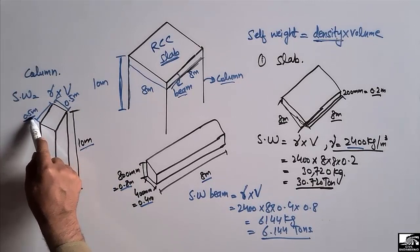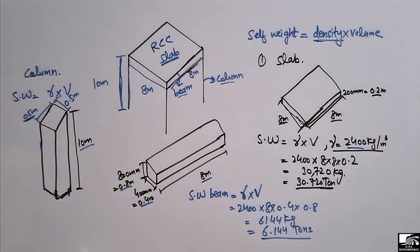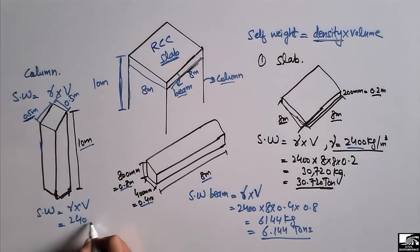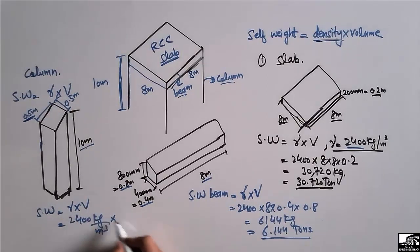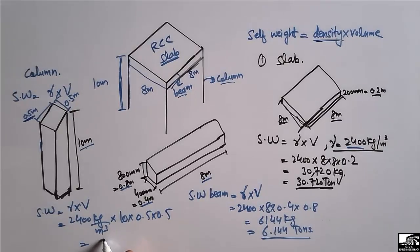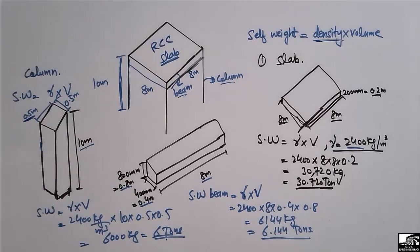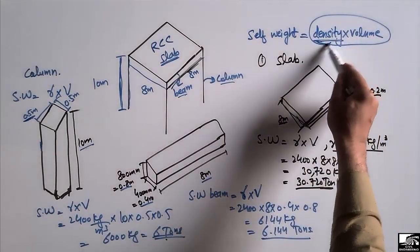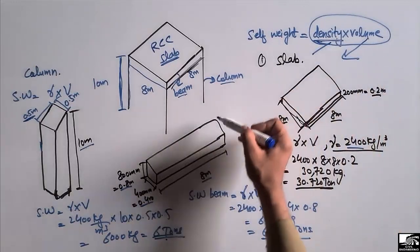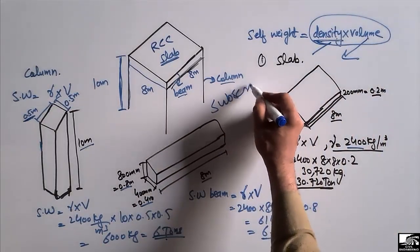To find the self weight of the column: γ = 2400 kg per cubic meter (RCC column), and volume = 10 × 0.5 × 0.5. Multiplying gives exactly 6,000 kg. Dividing by 1000, we get 6 tonnes. So the self weight of this column is 6 tonnes. We hope you understand how to find the self weight of a member by simply multiplying the material density and the volume. Thank you for watching, and don't forget to subscribe to our channel for daily civil engineering videos.